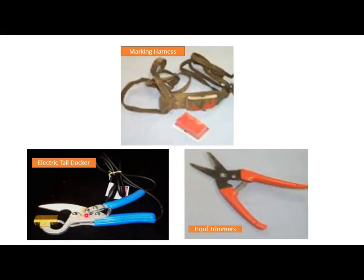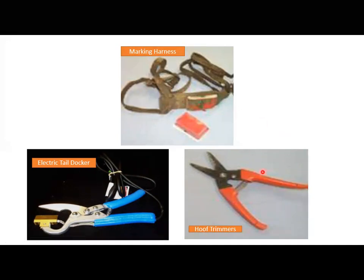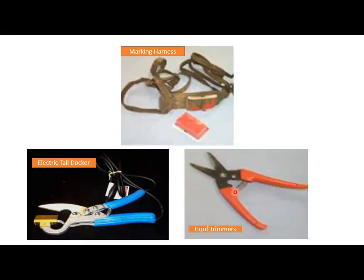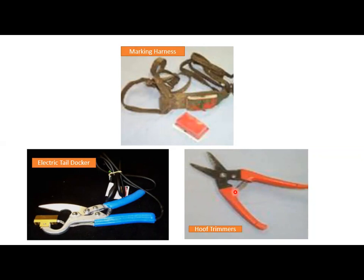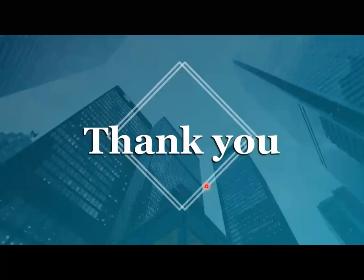This is a hoof trimmer, used for trimming damaged or infected hoof material. It is also used to shape and trim the hoof. It works like any other scissor-type instrument — simply place the cutting edge at the desired location on the hoof and squeeze the handles together, and the trimming is complete.